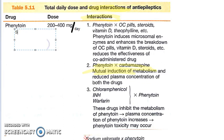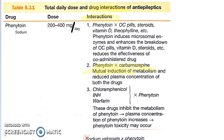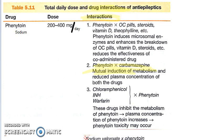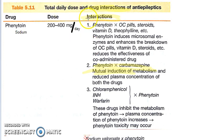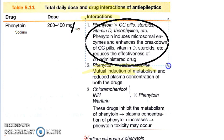The drug interactions of phenytoin sodium have been asked about five times, so let's focus on this. The dose, as already mentioned, is 200 to 400 mg per day for an adult.